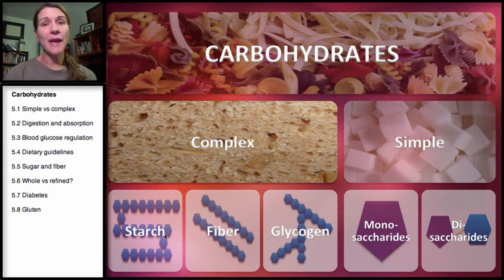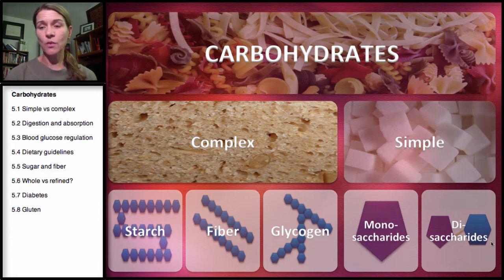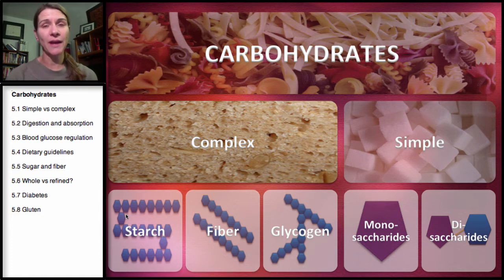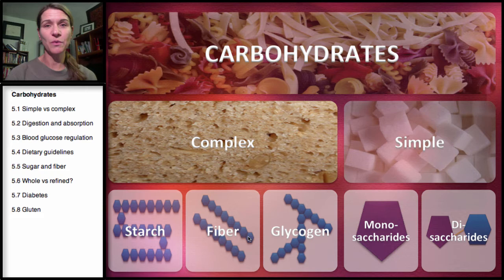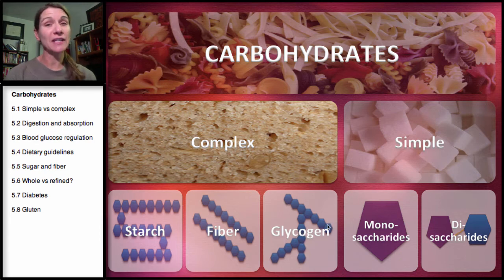Starch is the plant storage form of sugar. You see this blue hexagonal shape here — this is actually one glucose unit. Starch is just a storage form of sugar in plants; that's how plants store their energy. Fiber is also a chain of glucose, but it has bonds that we can't break, so we don't digest it. Glycogen is a branched package of sugar, and this is how we as humans store our sugar, or our energy.